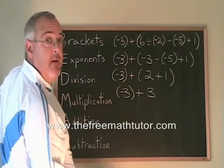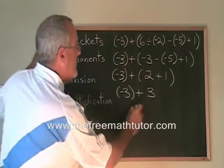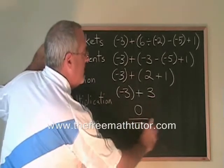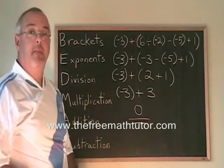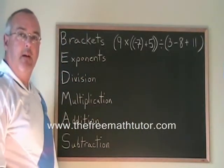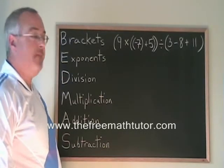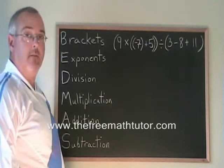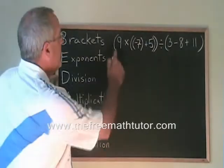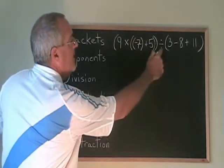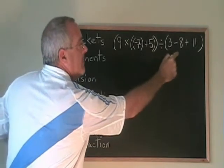And we have -3 plus 3. Again, applying the laws of integers, -3 plus 3 is equal to 0. That's our answer. Let's do another example of BEDMAS involving integers. This example has a lot of brackets involved. We have a big bracket here and then a divided by and then a big bracket.